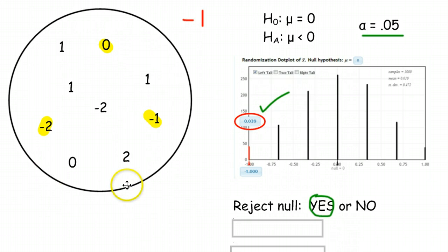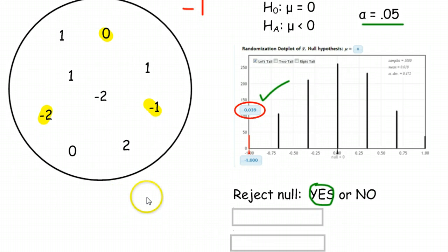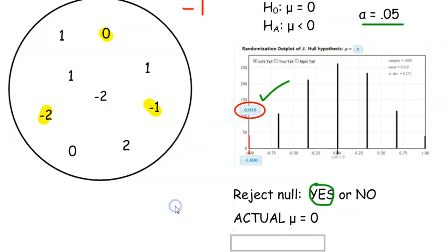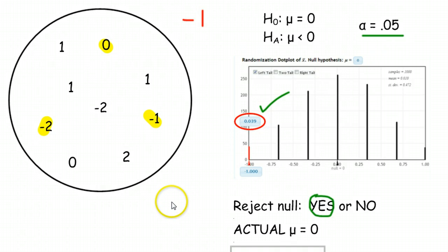Now, in this little example, we have the handy privilege of being able to check our work. The actual mu here, if we add these up, is 0. 0 plus 1, 2, 3, back to 1, negative 1, negative 2, 0. Uh-oh. 0 divided by 9 is 0. So our actual average of all the numbers in the population was 0. So that means that we did it wrong.